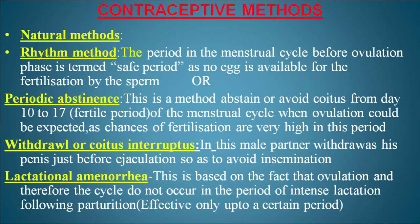Different contraceptive methods include natural methods such as the rhythm method, periodic abstinence, and withdrawal. The safe period — before the ovulation phase — is when no egg is available for fertilization. In periodic abstinence, couples avoid coitus from days 10 to 17, which is the fertile period of the menstrual cycle, as the chances of fertilization are very high. In withdrawal or coitus interruptus, the male partner withdraws his penis just before ejaculation to avoid insemination.